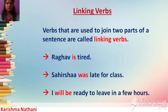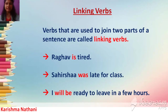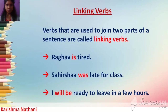'Shirsha was late for class.' — 'Was' shows past tense. 'I will be ready to leave in a few hours.' — 'Will be' shows future tense. So present tense, past tense, and future tense are states of any action. Other linking verbs include 'are', 'am', and 'were'.